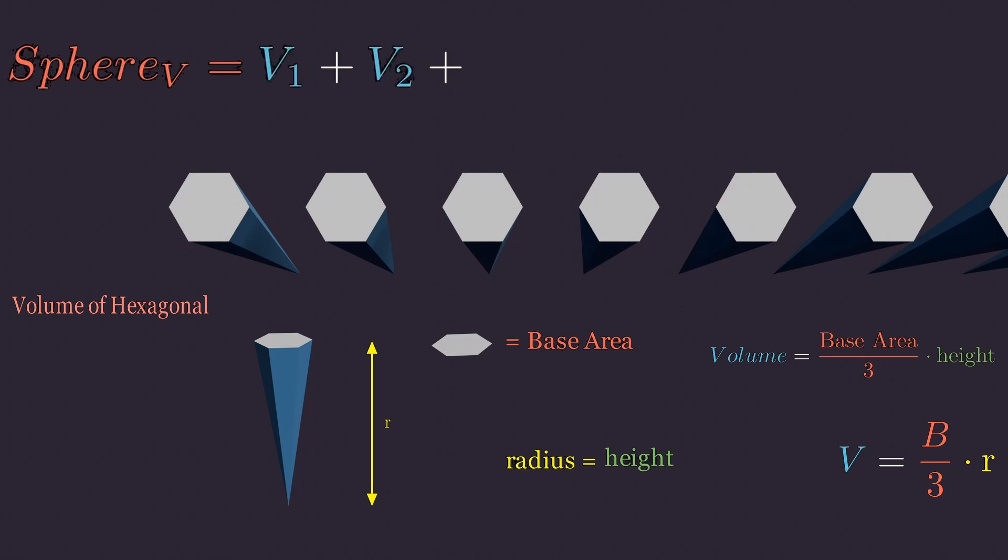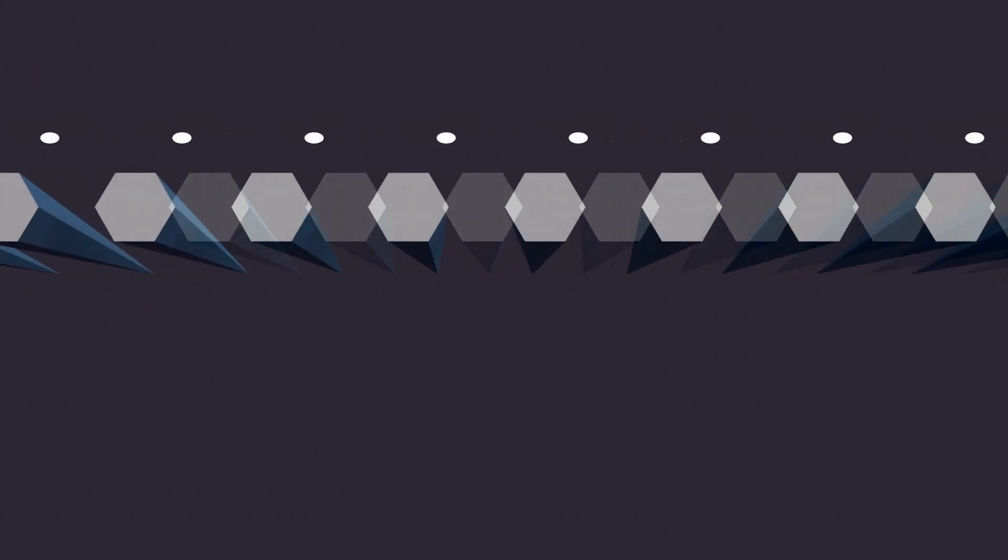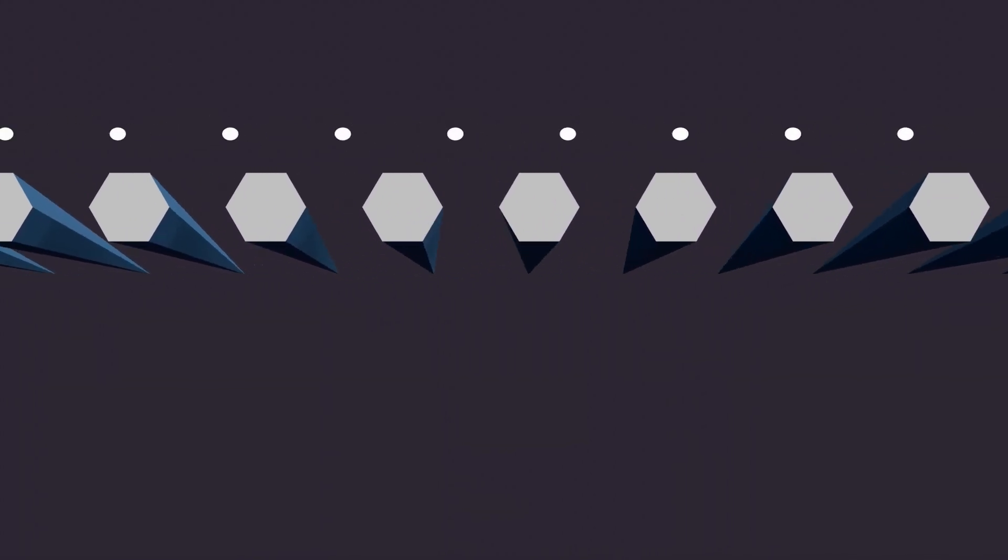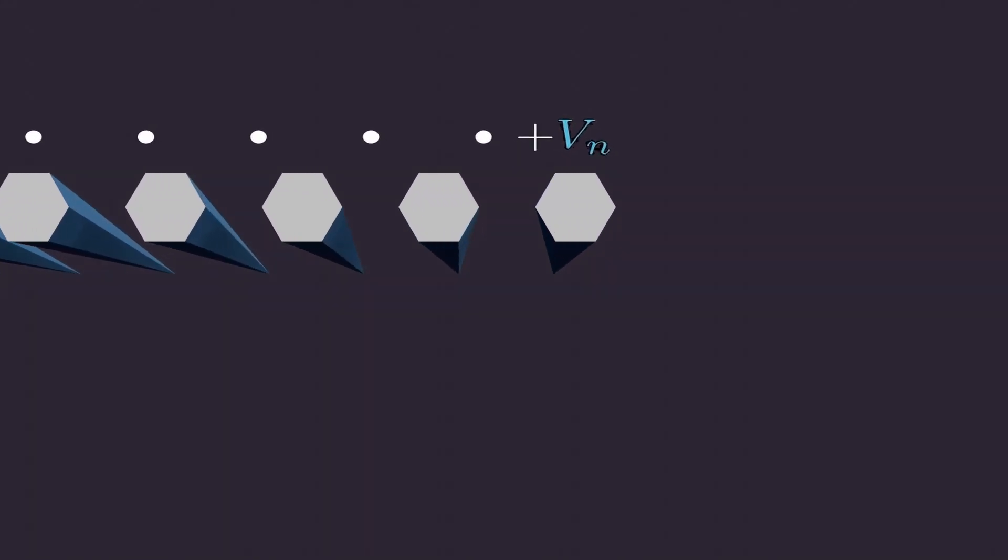To find the total volume of the sphere, we sum the volumes of all these hexagonal pyramids. Mathematically, this can be expressed as V1 + V2 + V3 + ... + Vn, where n is the number of pyramids.